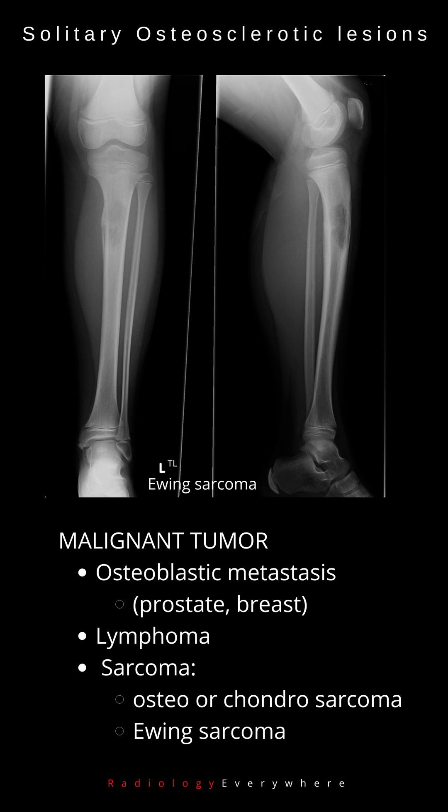Malignant tumors include osteoblastic metastasis — prostate, breast, lymphoma — osteosarcoma, chondrosarcoma, or Ewing sarcoma.